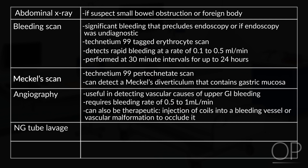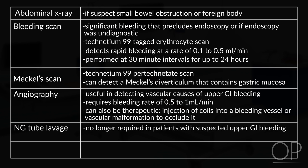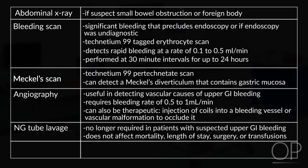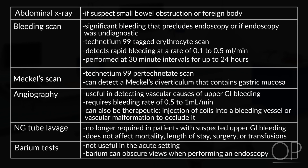NG tube lavage is no longer required in patients with suspected upper GI bleeding. Recent studies showed that NG tube lavage did not affect mortality, length of stay, surgery, or need for blood transfusions. Therefore, it is no longer indicated. Barium tests are not useful in the acute setting, as barium can obscure views when performing endoscopy.